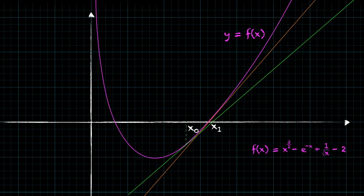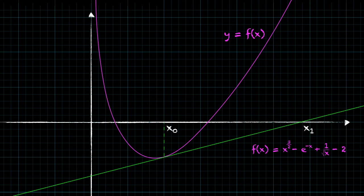Now consider what would happen if we chose a value of x closer to the turning point. Then what we notice is that the tangent is flatter, and so it intersects the x axis at a point much further away from the root. And therefore, as a result, the Newton-Raphson method is going to converge much more slowly when we choose a value of x closer to the turning point.